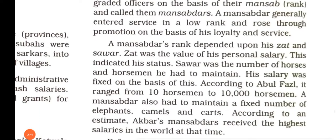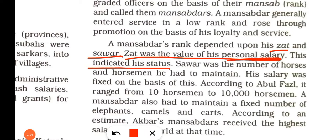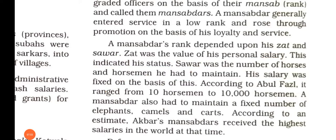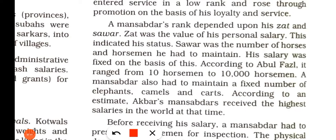Each Mansabdar had a Zat rank, which indicated his personal salary and status, and a Sawar rank, which determined how many horsemen he had to maintain. According to Abul Fazl, a Mansabdar could maintain anywhere from 10 to 10,000 horsemen, along with a fixed number of elephants, camels, and carts. According to estimates, Akbar's Mansabdars received the highest salaries in the world at that time.